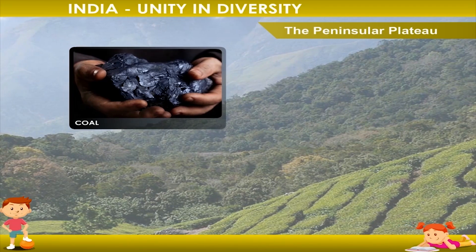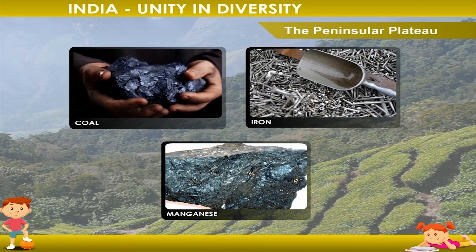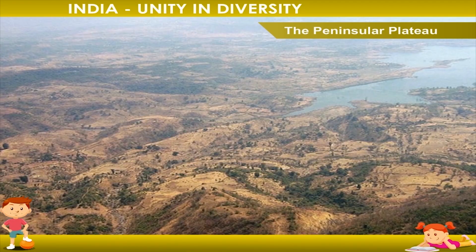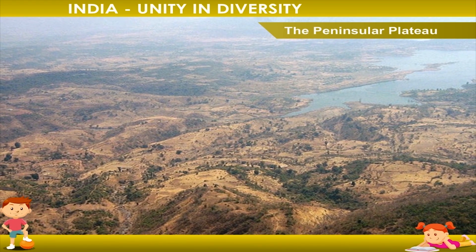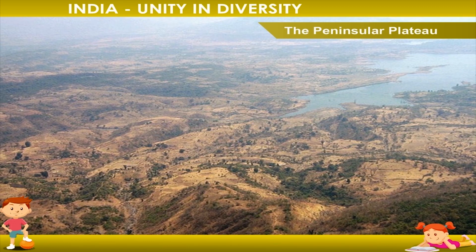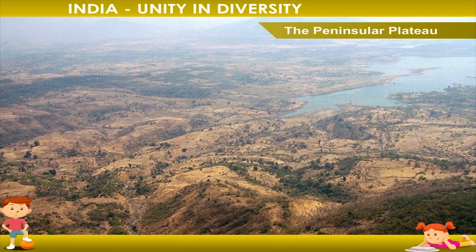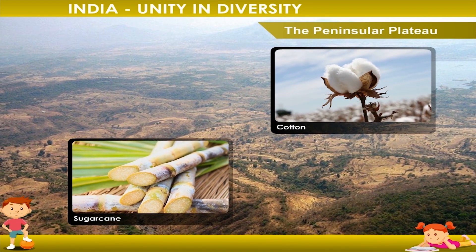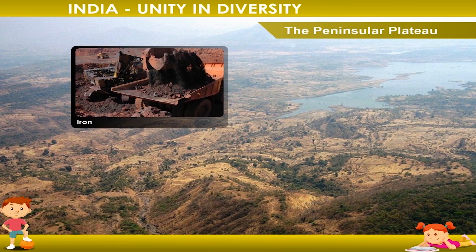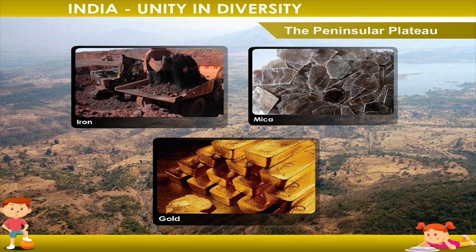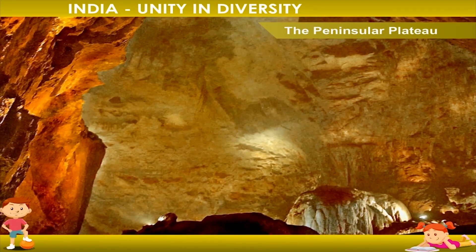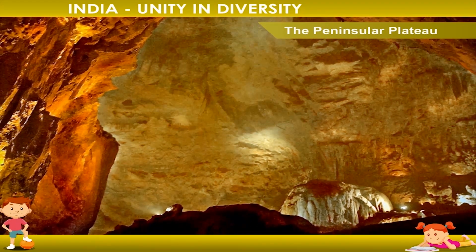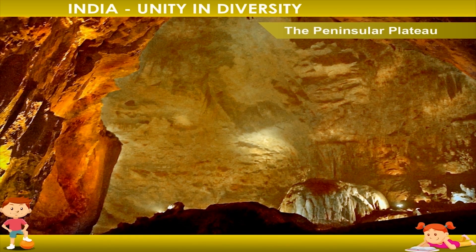Large deposits of coal, iron and manganese are found in the Chhota Nagpur Plateau, and many industries are based on these minerals. The Deccan Plateau has an uneven surface; the soils are not deep and the colour varies from place to place. Cotton and sugarcane are widely grown in the Deccan Plateau. Large deposits of iron, mica and gold are also found here. The Kolar gold mines in Karnataka are located in the Deccan Plateau, which forms a large portion of South India.